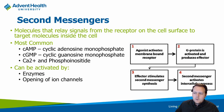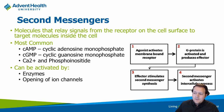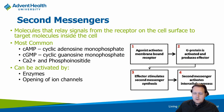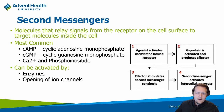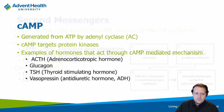Some of the more common second messengers include cyclic AMP (cyclic adenosine monophosphate), cyclic GMP, and calcium, which is a really important one. There's another molecule that goes along with calcium called phosphoinositide, which we'll discuss briefly. These second messengers are typically activated by enzymes or by the opening of ion-linked receptors — for example, allowing sodium or chloride to flow in — and these act as the catalyst to kick off these second messenger systems.